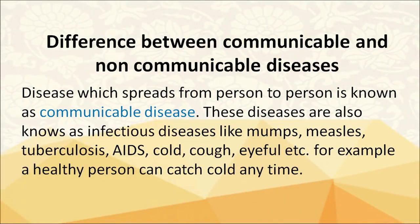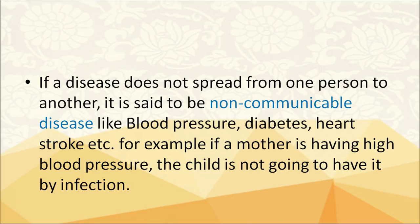The difference between communicable and non-communicable disease: a disease which spreads from person to person is known as a communicable or infectious disease — examples include mumps, measles, tuberculosis, AIDS, cold, cough and eye flu. If a disease does not spread from one person to another, it is non-communicable — examples are blood pressure, diabetes and heart stroke. For instance, if a mother has high blood pressure, the child is not going to have it through infection.